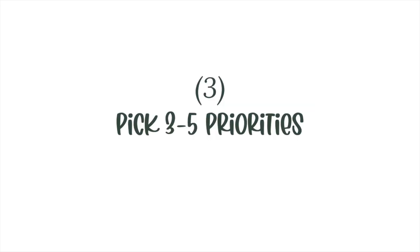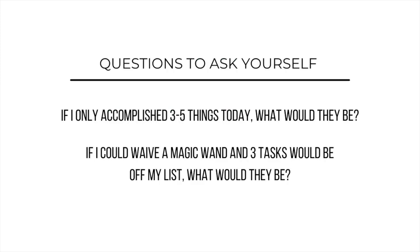Step three is to pick three to five priorities to focus on for the day. Here are a couple of questions to help you choose. Number one: if I only accomplish three to five things today, what are the most important things I would choose? The other question I really like is: if I could wave a magic wand and three tasks would be off my list, what would they be? These are typically the tasks we're procrastinating on — the ones we keep putting on the back burner but that keep taking up space in our mind and stressing us out.